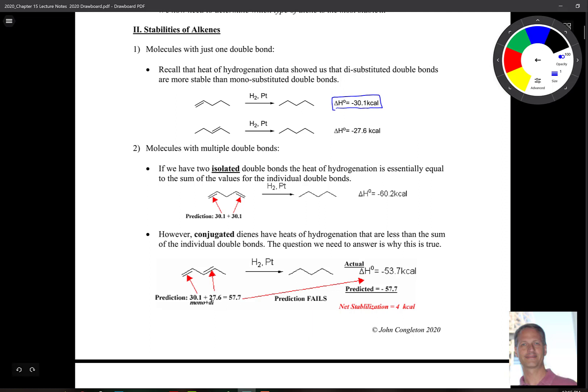If you have a disubstituted alkene, then the delta H is negative 27.6. It's lower, remember, because of Zaitsev's rule. Remember we saw that in first semester. And the more substituted the double bond, the more stable that double bond is. And the lower the delta H is, the more stable.